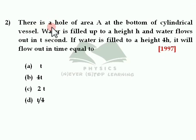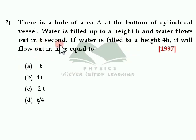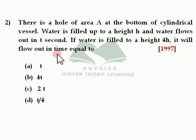There is a hole of area of cross section A at the bottom of a cylindrical vessel. Water is filled up to height h and water flows out in t seconds. If water is filled up to height 4h, it will flow out in time equal to — and the options are t, 4 times t, 2 times t, and t by 4. Initially water is filled to height h and time required to empty is t seconds. Now if you fill water up to height 4h, what is the time required to empty that tank?